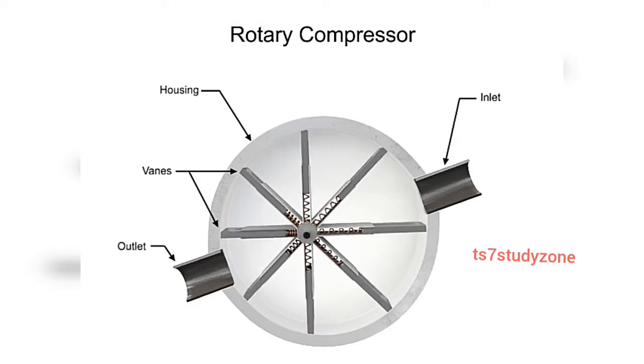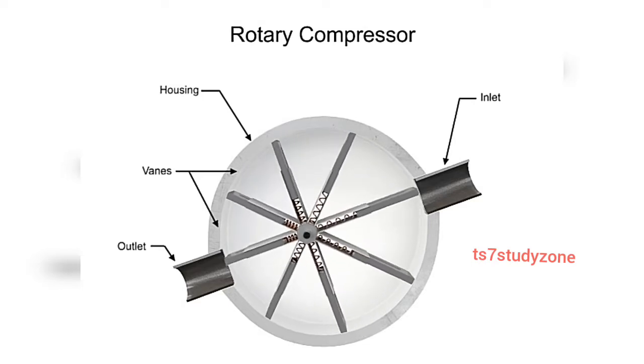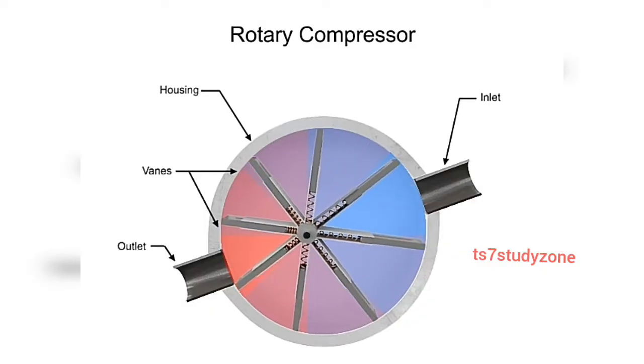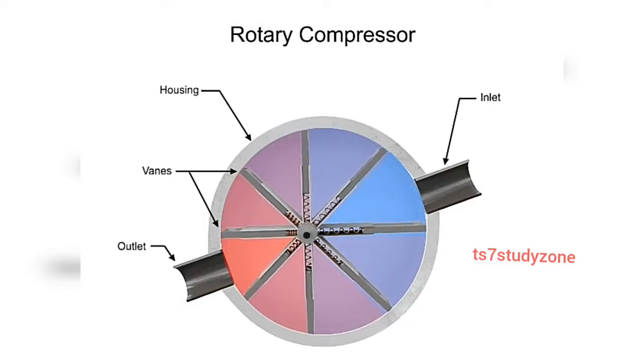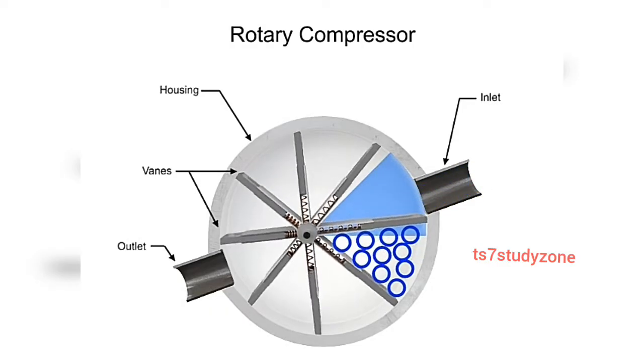As the shaft rotates, the vanes slide in and out to maintain contact with the cylindrical compressor wall. As they do, they create chambers within the cylinder of varying sizes. Air enters at the largest chamber.